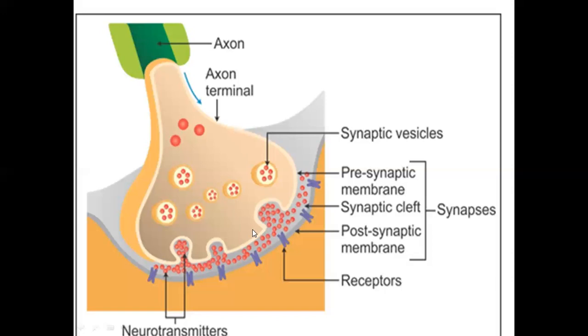When calcium enters the cell, the synaptic vesicles move to the presynaptic membrane and burst. First, the neurotransmitter is released. After release, the neurotransmitter attaches to the receptors on the post-synaptic membrane. These receptors generate the nerve impulse, and the nerve impulse continues.